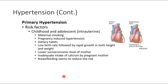In children, risk factors for primary hypertension include maternal smoking, pregnancy-induced hypertension, poor dietary habits before birth, low birth weight followed by rapid growth, and lower socioeconomic status. If one factor is to blame, it's likely food companies engineering food with high sugar content that bypasses satiety circuitry. Processed foods are inexpensive, so socioeconomic status absolutely impacts health outcomes.